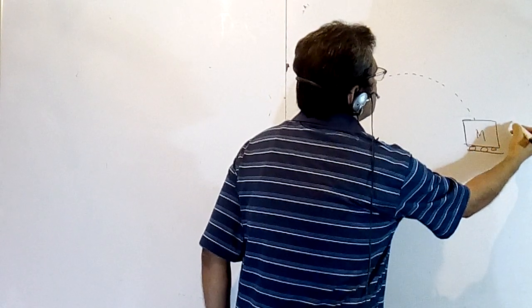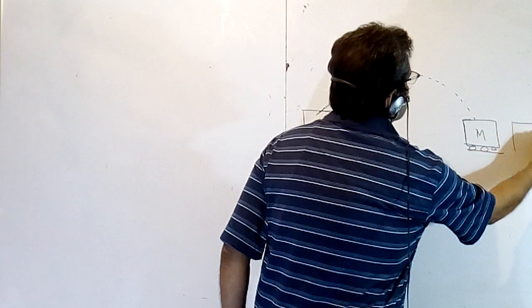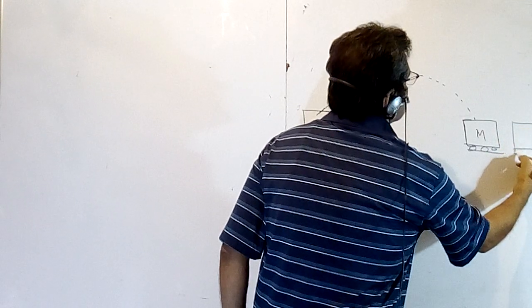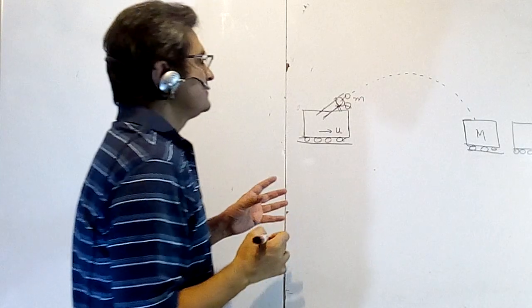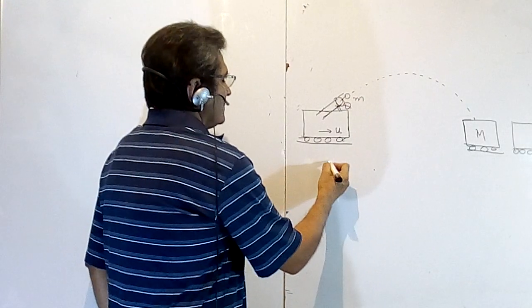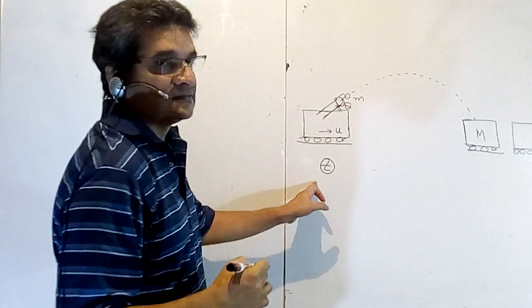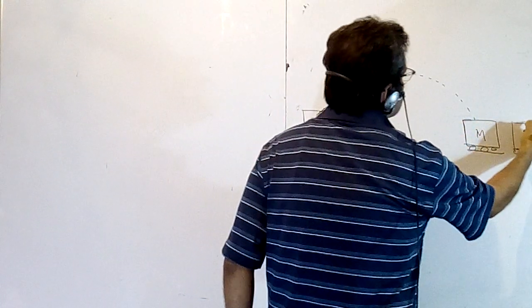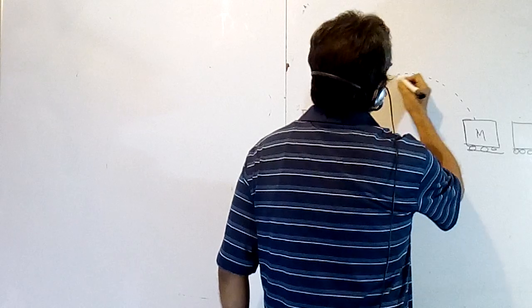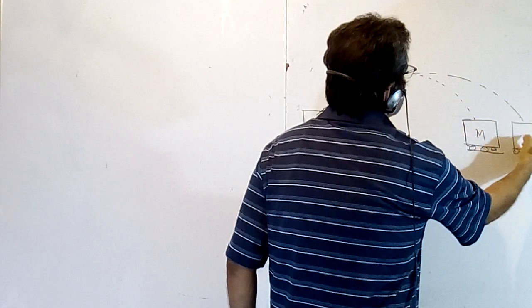Without friction, so this body will naturally start moving because of the conservation of momentum. And it is said that it fires the cannon after time t again, and that cannon hits the body again - again it lands at that body.